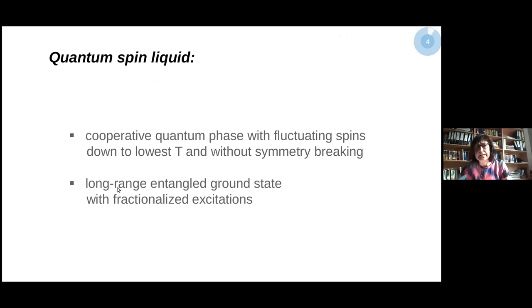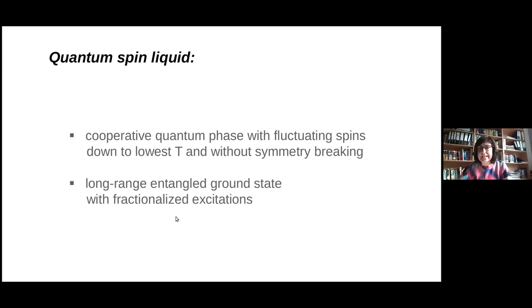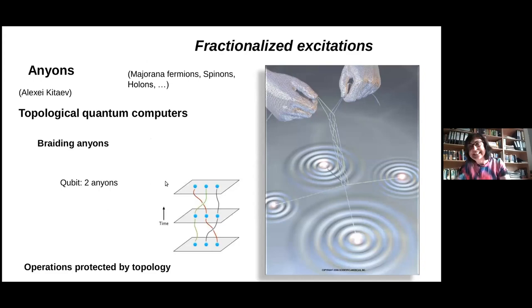Let me first describe how we define a quantum spin liquid. This is a cooperative quantum phase with fluctuating spins down to lowest temperature and without symmetry breaking. We don't have long-range order down to lowest temperatures, but the system shows long-range entanglement in the ground state. What is very interesting is that the excitations in this type of state are fractionalized excitations. This is my motivation for why we are interested in spin liquids — because of these fractionalized excitations.